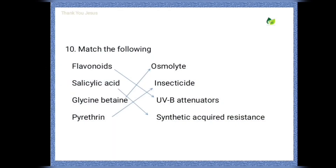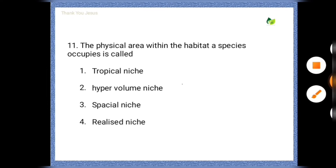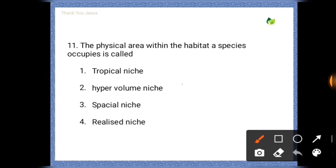Next question — match the following: flavonoids are related to UVB attenuators; salicylic acid is related to systemic acquired resistance; glycine betaine is related to osmolyte; pyrethrin is related to insecticide.